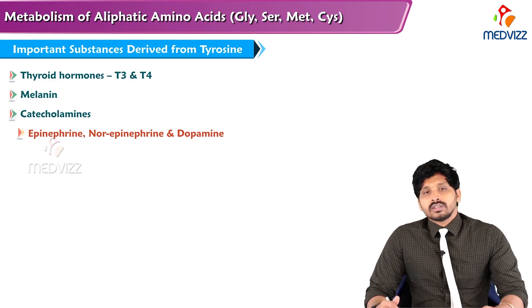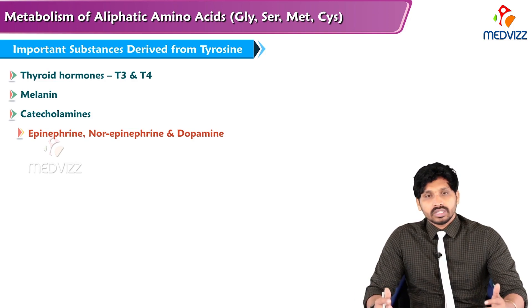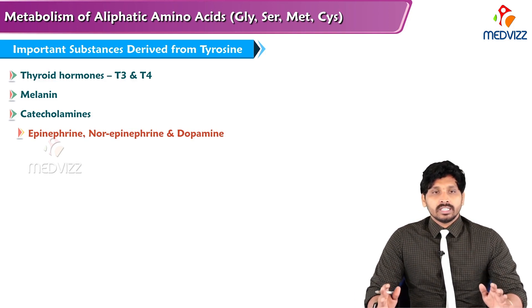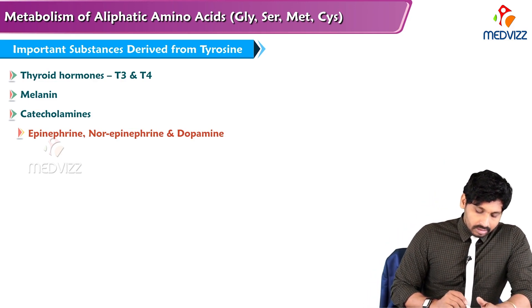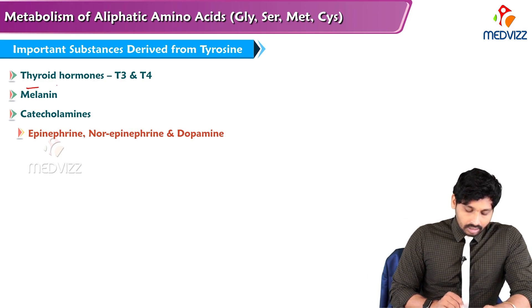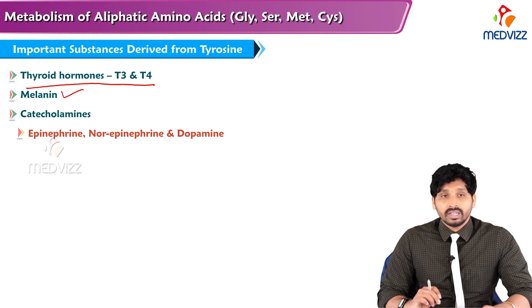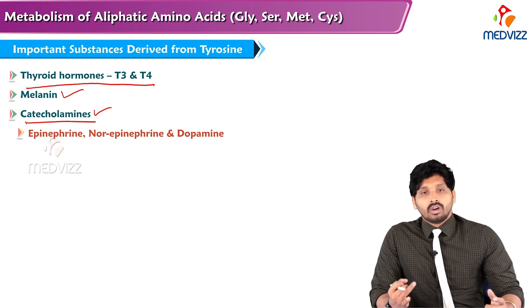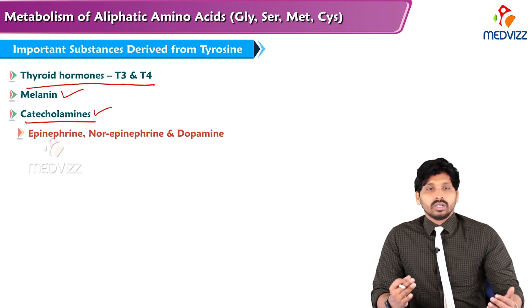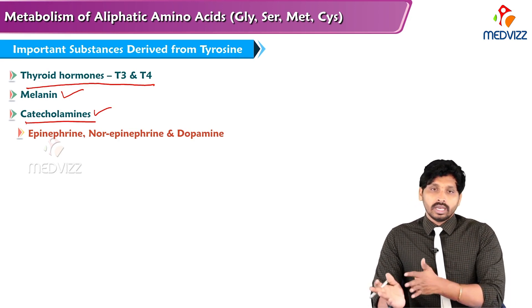The important substances derived from tyrosine — phenylalanine first converts to tyrosine. The specialized products from both include: thyroid hormones T3 and T4, skin pigment melanin, and neurotransmitters like catecholamines — epinephrine, norepinephrine, and dopamine.